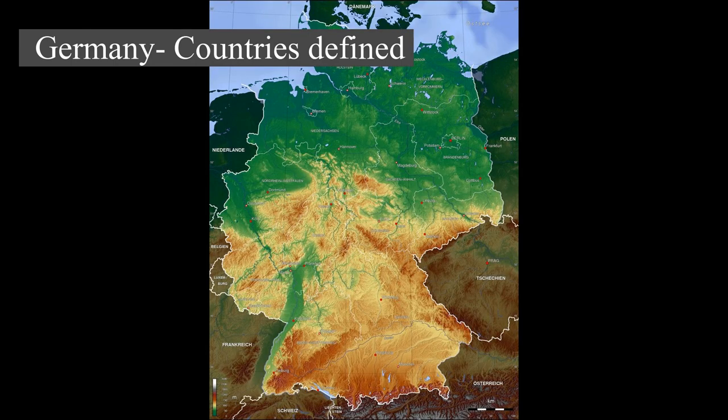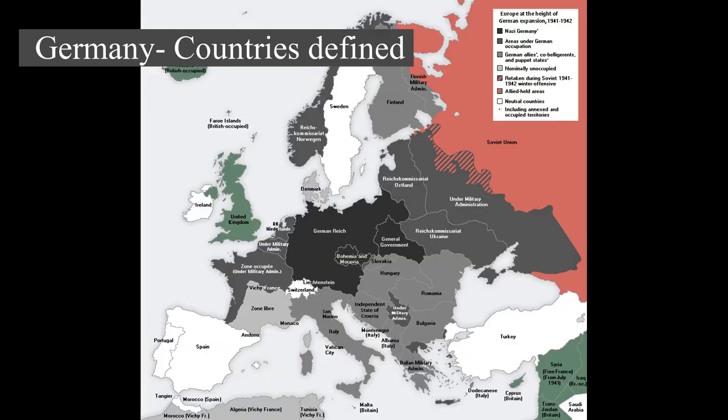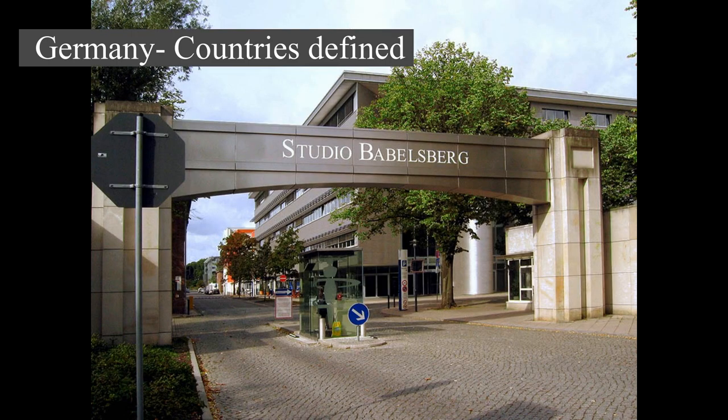Various Germanic tribes have inhabited the northern parts of modern Germany since classical antiquity. A region named Germania was documented before AD 100. In 962, the Kingdom of Germany formed the bulk of the Holy Roman Empire. During the 16th century, northern German regions became the center of the Protestant Reformation. Following the Napoleonic Wars and the dissolution of the Holy Roman Empire in 1806, the German Confederation was formed in 1815.